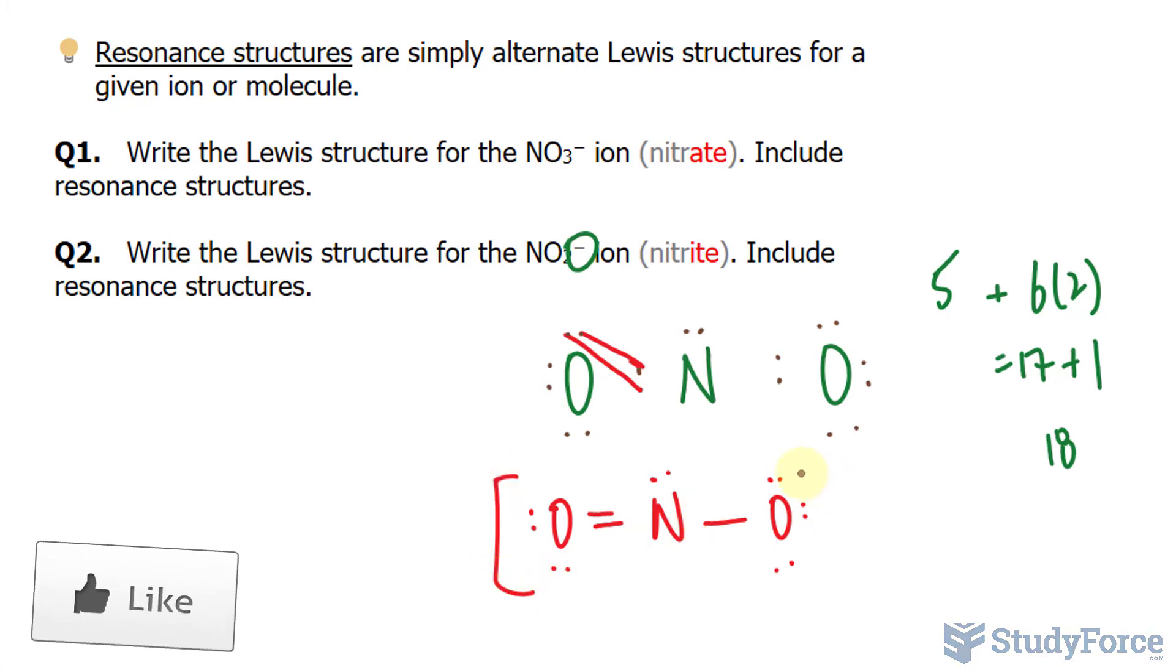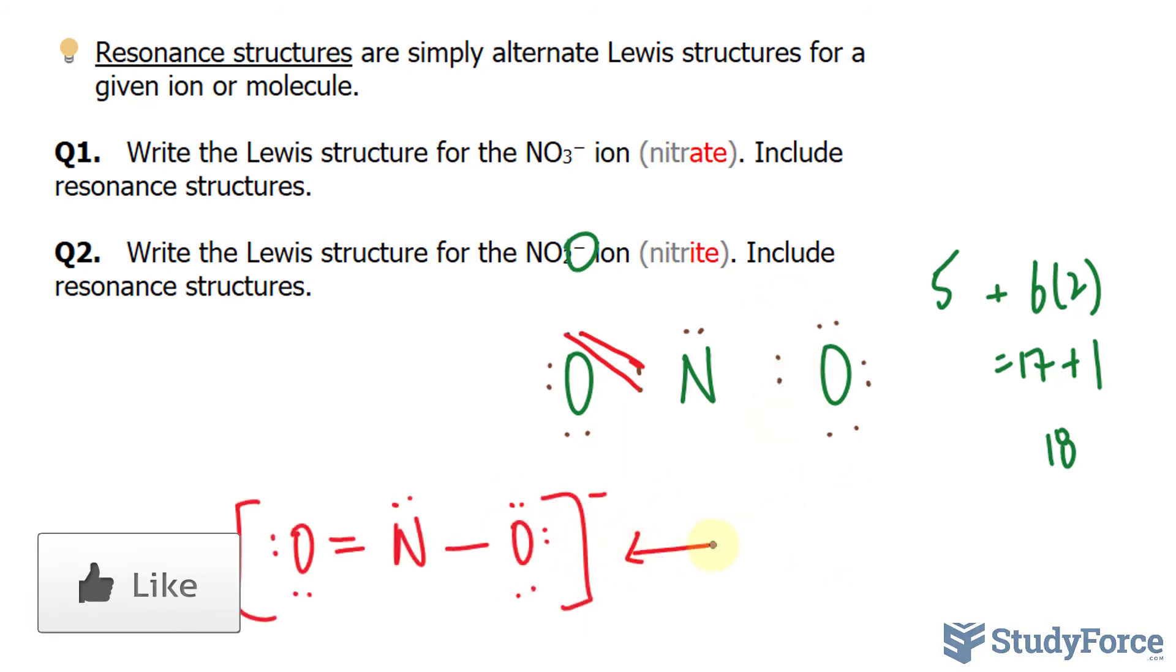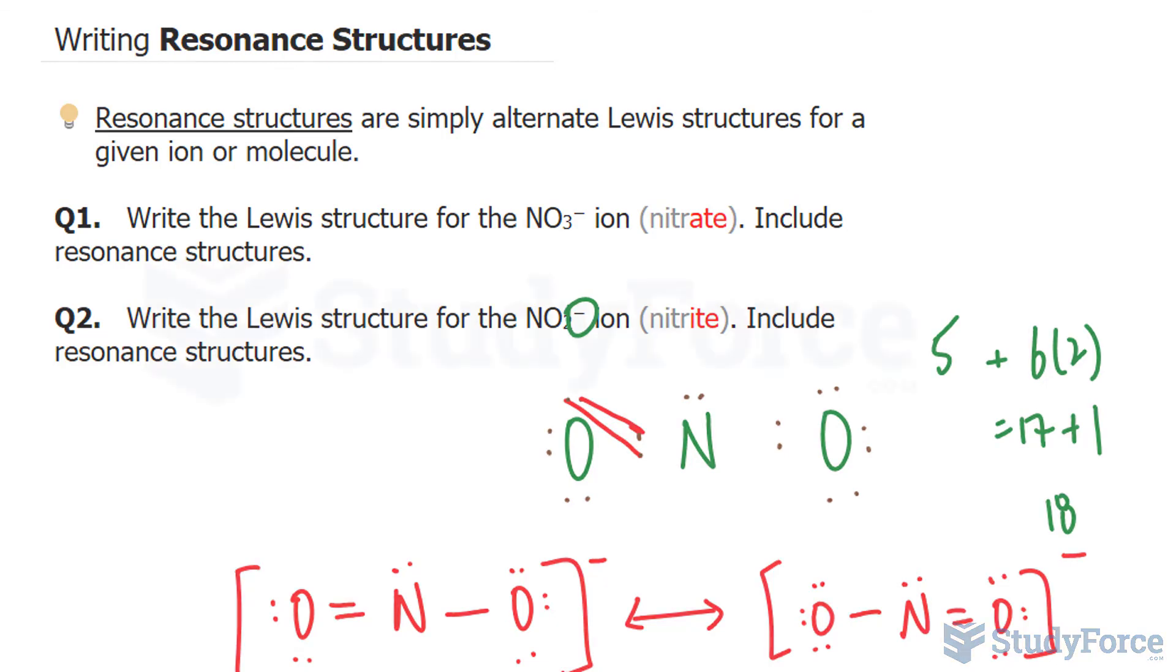That's one resonance structure, but it could have also happened over here. So we can repeat this structure so that the double bond occurs with that second oxygen, like this. And there you have it. That is how to write resonance structures.